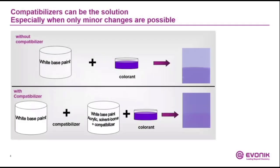You can overcome this poor color acceptance, especially when you cannot change the formulation of the base paint or the colorant, with compatibilizers. Compatibilizers are substances of low molecular weight that can be added to the base paint and they improve the colorant acceptance, which you can see here. Without compatibilizer you can see a very high rub-out value, and then in the second case the compatibilizer is added to the base paint, mixed in well, and then when you add the colorant you get a much better colorant acceptance.